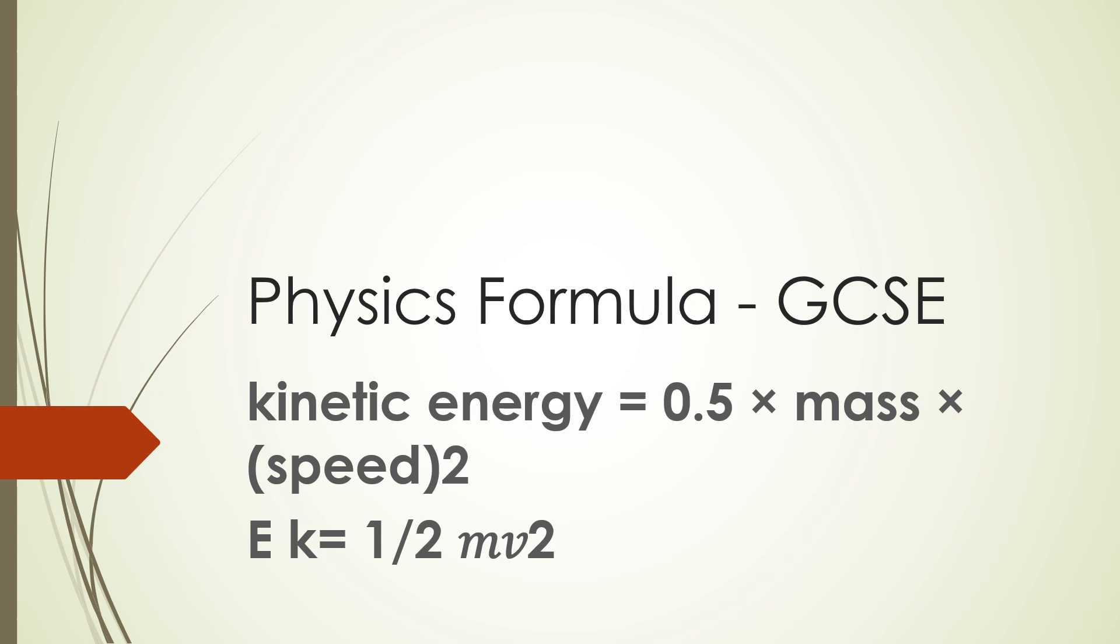The first one is on kinetic energy, and as you can see, the kinetic energy formula is half mass times speed squared. It can also be velocity squared because speed and velocity are interchangeable.